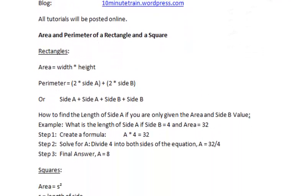So I'm going to jump right in here and first I want to point out the rectangles. The area is going to be equal to the width times the height. And the perimeter is equal to 2 times side A plus 2 times side B, or you can just add the sides up like this: side A plus side A and side B and side B.